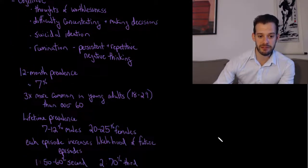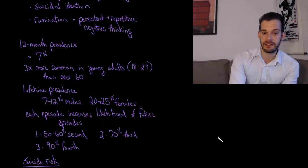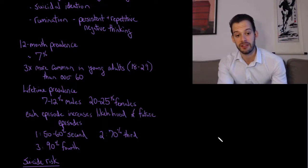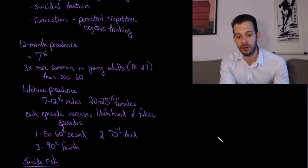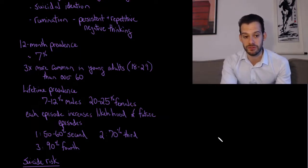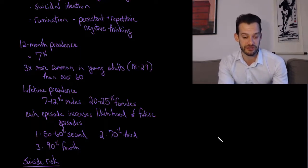And the estimated 12 month prevalence for major depressive disorder in the DSM-5 in the US is estimated to be about 7%. And it's more common in young adults than older adults. So it's about three times more common in people age 18 to 29 compared to people who are over the age of 60.